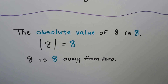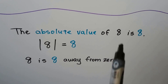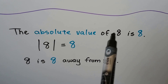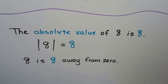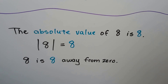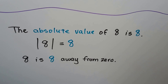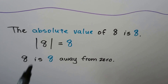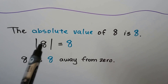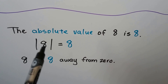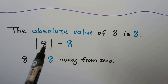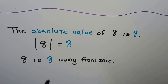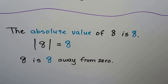The absolute value of a positive eight — because now we don't have a negative sign in front of it, we know it's positive — the absolute value of a positive eight is eight. You'll see it inside the bars like this, and it's asking you for how many hops away it is from zero. It's eight hops away.